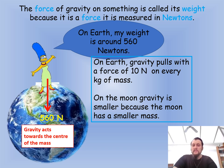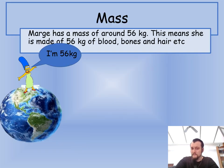So if her weight is 560 newtons and you get pulled 10 newtons for every kilogram of mass, then what would her mass be? It will be on the next slide. Have a think. If you can write it down for me. On the moon, gravity is smaller because the moon has smaller mass, which we'll get onto in a bit. So it was 56 kilograms. That means she's made up of 56 kilograms of blood, bones, hair, et cetera. So that's what your mass is. Your mass is all your matter. It's the stuff you're made of. So every little atom all added together, everything you are is your mass.